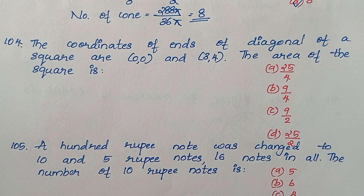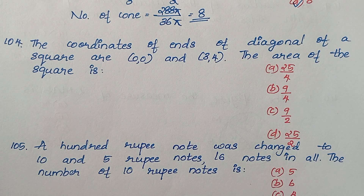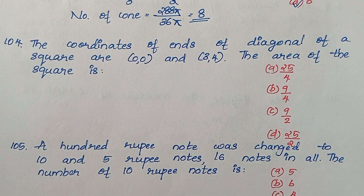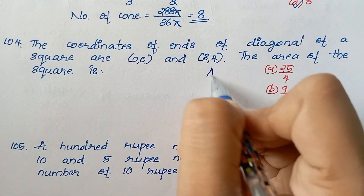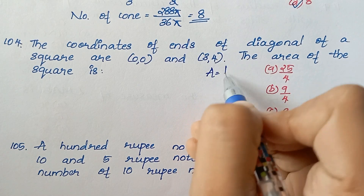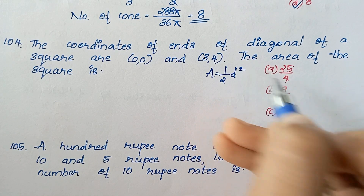Question 104: The coordinates of the ends of a diagonal of a square are (0, 0) and (3, 4). Find the area of the square. The diagonal has two endpoints, and the area is equal to half d².